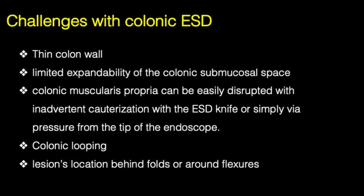Also, the colonic muscularis propria can easily be disrupted with any rough movement with the knife, or simply by applying extra pressure by the tip of the endoscope or by the cap. In some patients, colonic looping is a problem because it adds to the instability of the scope position and makes ESD harder. Also, some lesions are located behind folds or around corners, which can complicate the dissection process.